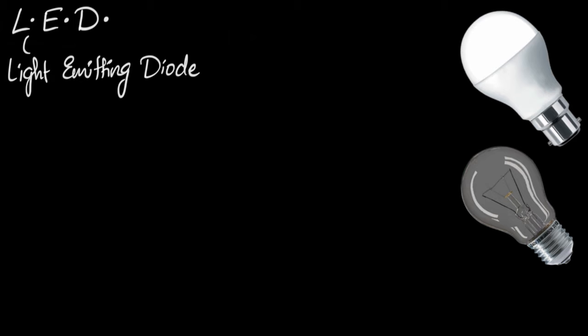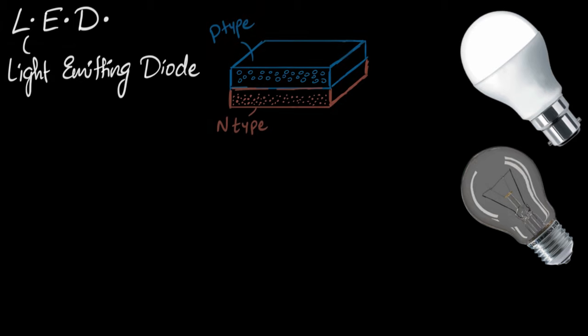And just to quickly recap, a P-N junction is basically a P-type semiconductor and an N-type, a single crystal containing one side P-type which has a lot of holes in it, another side N-type which has a lot of free electrons in it. And there is a barrier in between, which we call the depletion region, which does not allow the electrons and the holes to recombine with each other.